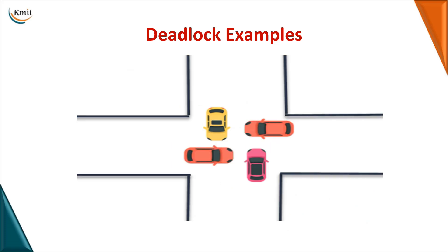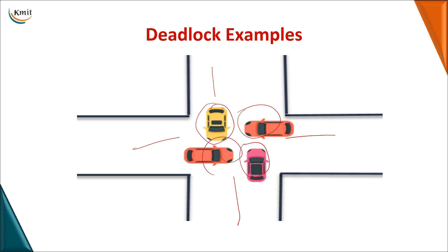Another example: these four ways represent resources and these are your processes. If a particular process wants to use a resource, there is a block. This real-time example of four cars at an intersection is also a deadlock, because none of them can move further until one of them makes a move out.